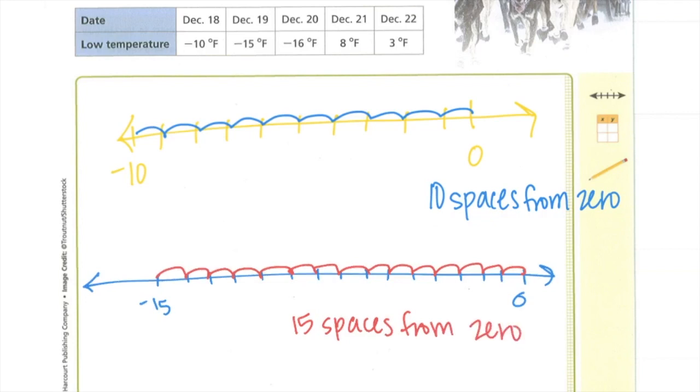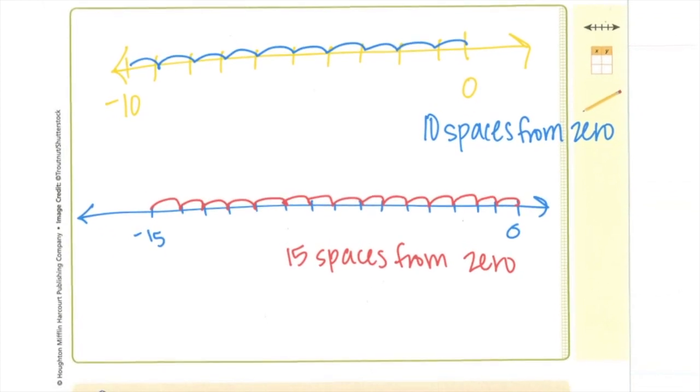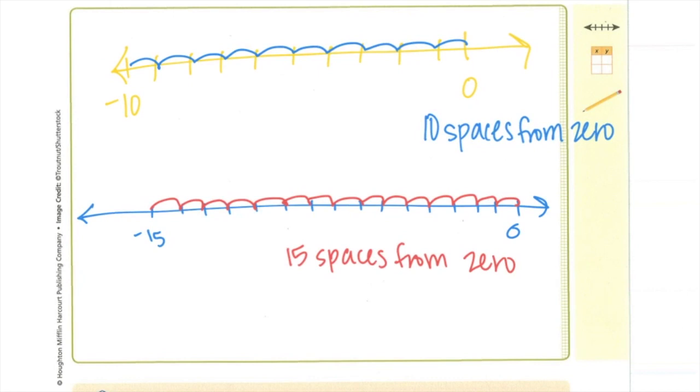I want you to pause and do the negative 16 and figure out how far from 0 negative 16 is. If you put it on the number line and count 1, 2, 3, 4, 5, 6, 7, 8, 9, 10, 11, 12, 13, 14, 15, 16. Have you noticed a pattern here? What would 8 be? Right, 8 is 8 spaces from it. And what about 3? Correct, 3 spaces. So you can use the number line.